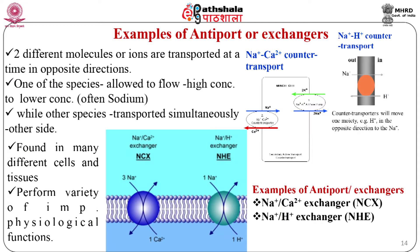Antiport exchangers are also called counter transport, meaning that two different molecules or ions are transported at the same time in opposite directions. One species is allowed to flow from high to low concentration — often sodium — while the other species is transported simultaneously to the other side. Examples of exchangers: exchangers are also known as antiporters, found in many different cells and tissues, and perform a variety of important physiological functions.